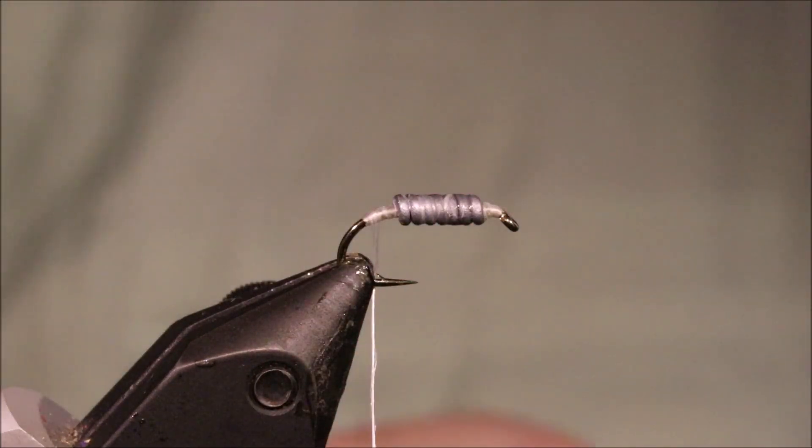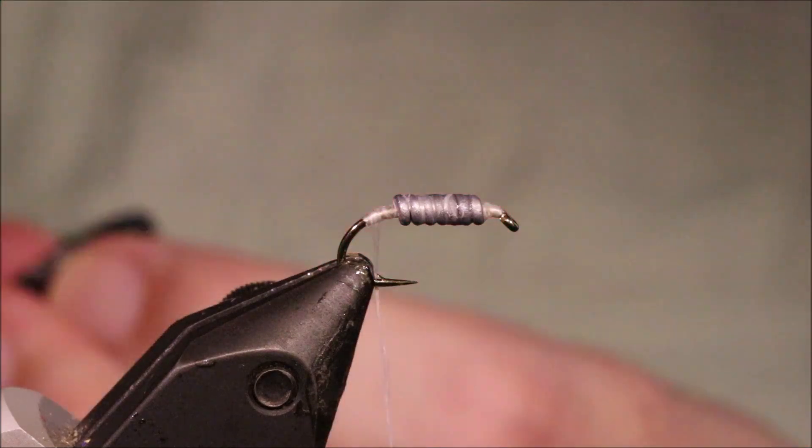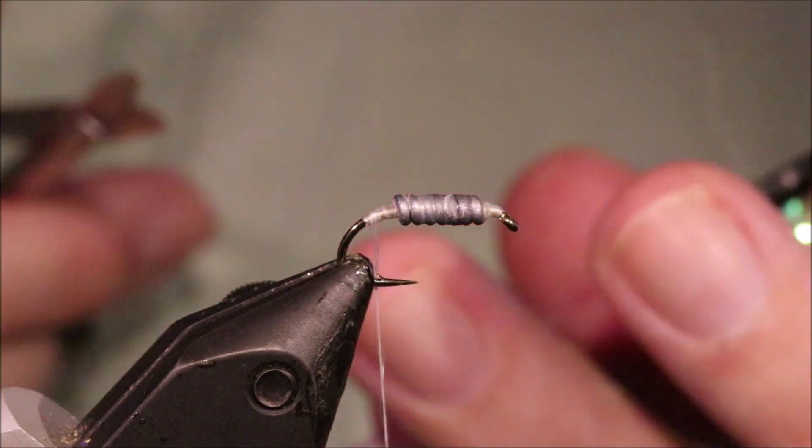And then I'll tie in my shell back, which is just a wide, a number 12 or something pearly mylar. You could go a bit wider if you want, but you don't really need a big wide back on it.